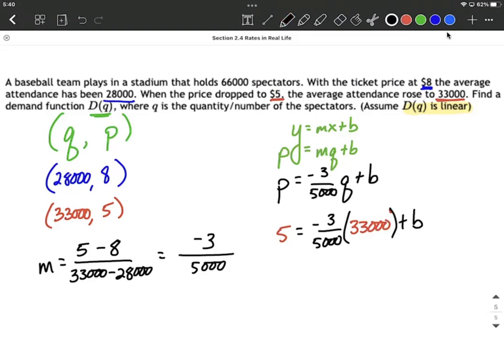Still plus B. Now I'm going to go ahead and think of that 33,000 as being over 1, so I can combine these fractions together by multiplying them. So I get 5 equals negative 99,000 over 5,000. Well, that's going to reduce down some at least.